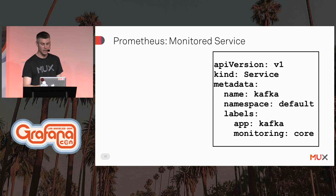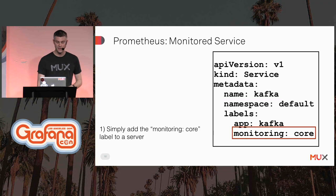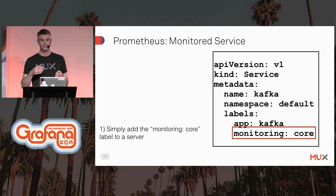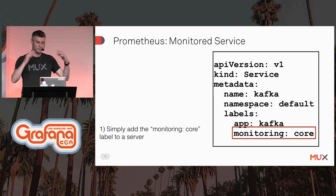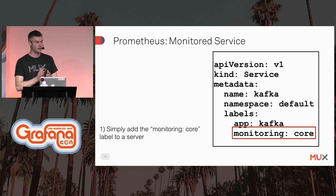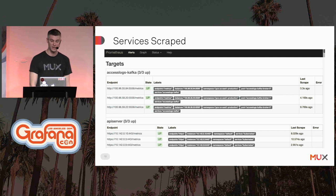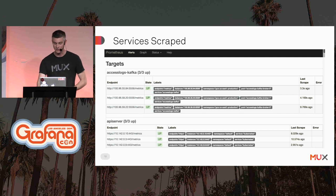Here's an example of a Kafka service we run. You simply add the monitoring core label, and Prometheus will identify all the Kafka broker pods running as part of that cluster and scrape them for metrics. And here's a sample of the Prometheus web UI showing some targets that were automatically discovered and scraped.